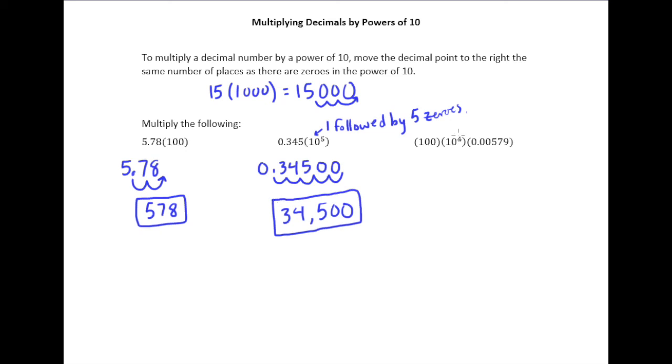Now here's one where we have two powers of 10 multiplied together and then multiplied by 0.00579. There are two zeros here and four zeros here, so we are going to move the decimal to the right a total of 6 places because there are a total of six zeros in those powers of 10.